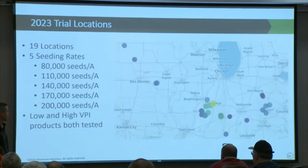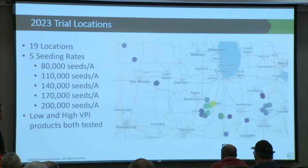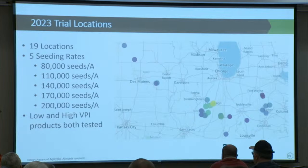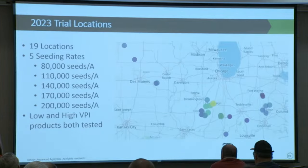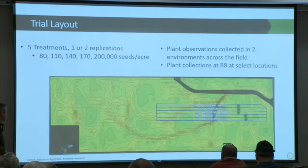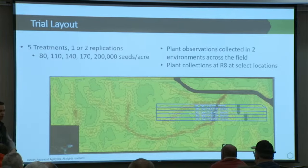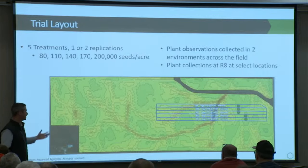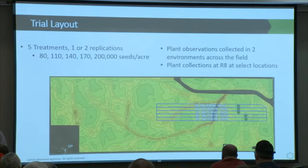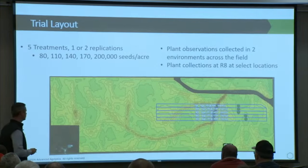We had 19 locations looking at five seeding rates. This is all field-scale work, typically replicated twice at 80, 110, 140, 170, and 200,000 seeds per acre — a wide range trying to catch the lower end that might be feasibly planted commercially and the upper end. We looked at both low and high VPI products within this. We lay the trial work across our proprietary layers in the background, and once we get yield data back from our growers, we can parse out the response to population across different environments within each of those strips.